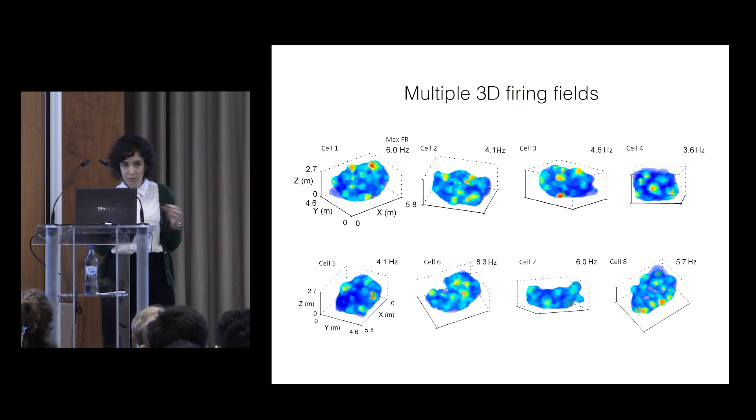And here are eight different cells, all in the same room. You can see that they all have these multiple fields, multiple 3D firing fields, like we saw in the 2D grid cells.